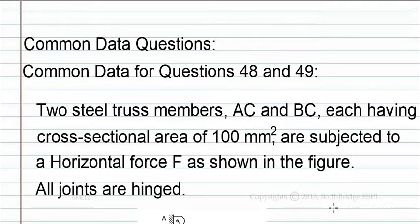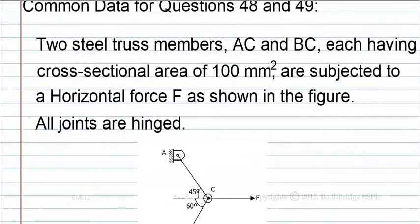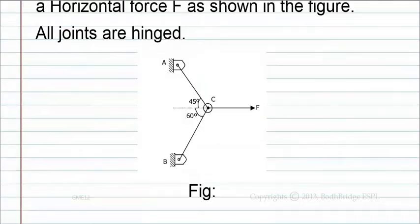Common data for questions 48 and 49: Two steel truss members AC and BC, each having a cross-section area of 100 mm², are subjected to a horizontal force F as shown in the figure. All joints are hinged. The figure is given here.